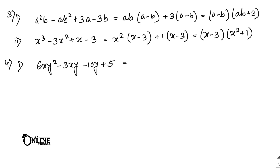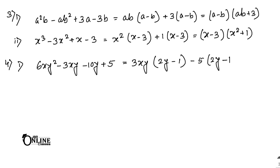Number 4.1: 6xy² - 3xy - 10y + 5. From the first two, common 3xy gives 3xy(2y - 1). From the next two, common minus 5 gives minus 5(2y - 1). So the answer is (2y - 1)(3xy - 5).